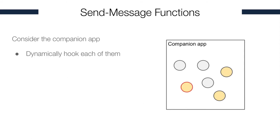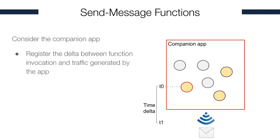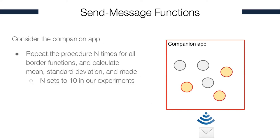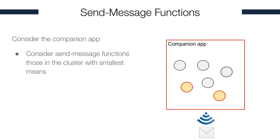We then dynamically hook each of these send message candidates and let the user use the app to communicate with the IoT device. For each send message candidate, we record the time delta between the app invocation and the time at which a network message is sent. We repeat this 10 times for each candidate, then compute the mean, standard deviation, and mode for each measurement. Finally, we use k-means clustering to cluster these methods based on the computed mean, and we take the cluster with the minimum mean — all functions within that cluster are considered send message functions.